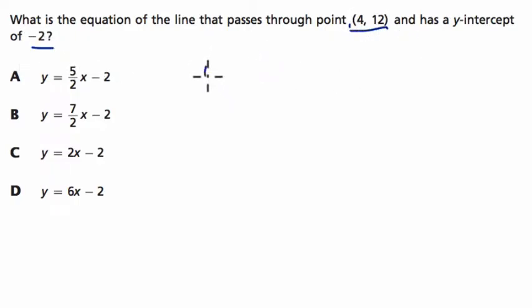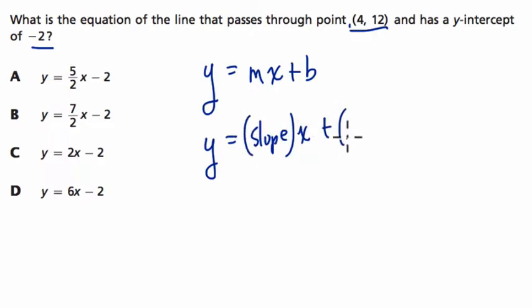An easy way to think about this is to recognize that we can use the structure mx plus b for a line. What this means is y will always equal m (the slope) times x, plus the y-intercept. This is the template that always works for every line.